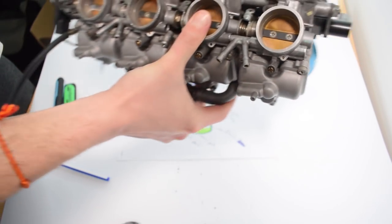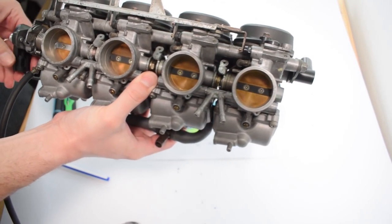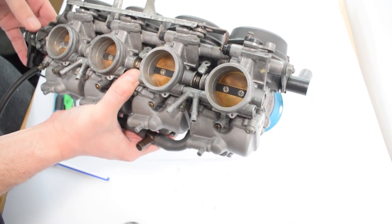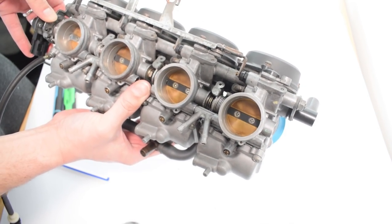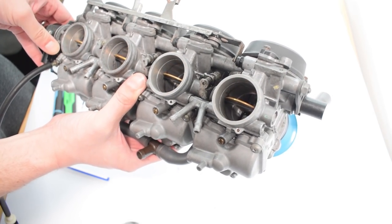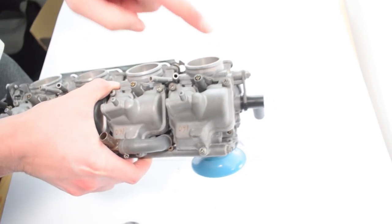Now here in the back we can see our butterfly connected to our throttle. When the throttle opens the butterfly opens. Down here is our float bowl.